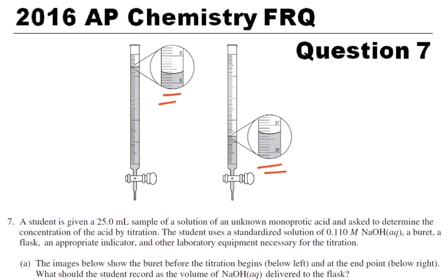So a student is given a 25 milliliter sample of a solution of an unknown monoprotic acid and is asked to determine the concentration of the acid by titration. The student uses a standardized solution of 0.110 molar NaOH and a burette, a flask, an appropriate indicator and other laboratory equipment necessary for the titration.